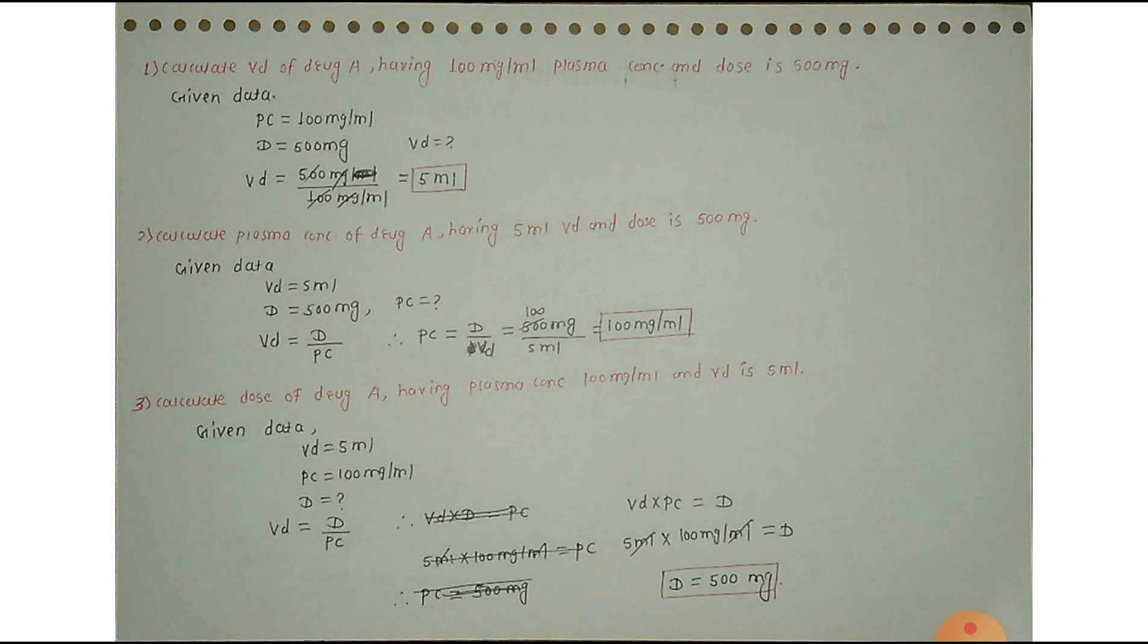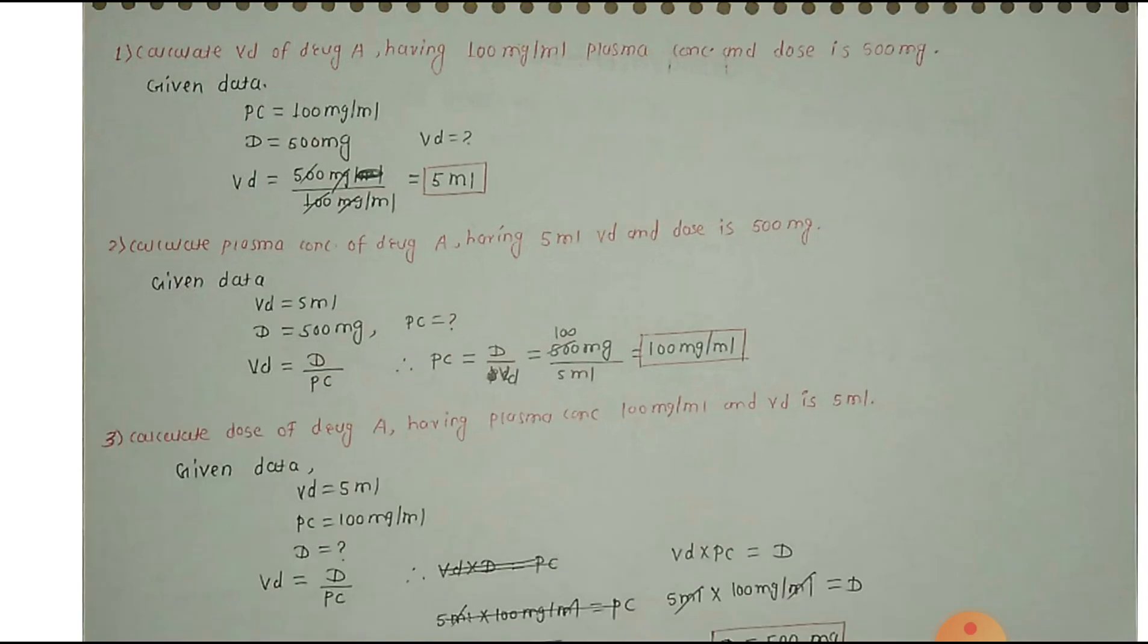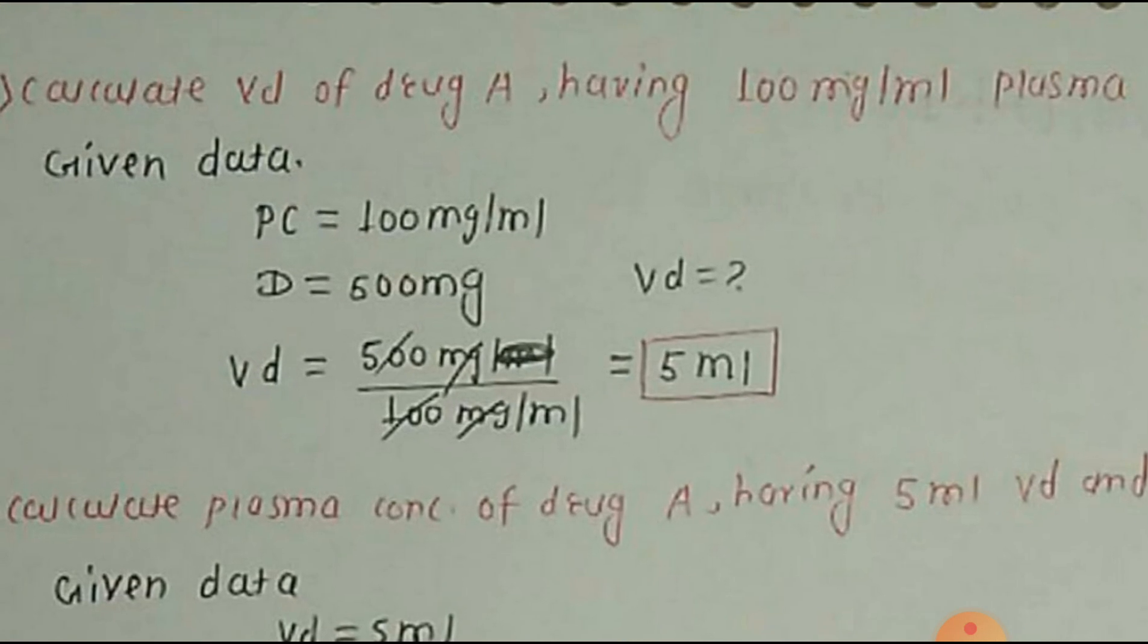So, Volume of Distribution formula is dose administered upon plasma concentration. So, dose administered is 500mg upon 100mg per ml. Milligram, milligram get cancel. ml goes upside and the answer will be 5ml.